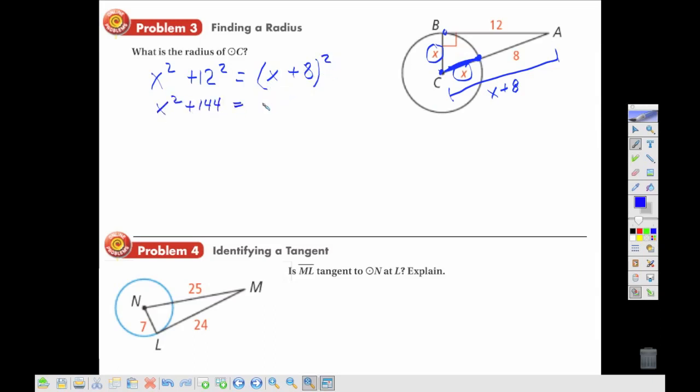That means we'll have to multiply this side out using FOIL. Now, and simplifying the equation, notice that the x squareds are going to cancel out. And I can move my 64 over to the other side to get x alone, which is going to give me 80 is equal to 16x,